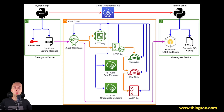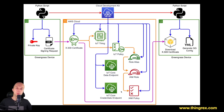Finally, we obtain the AWS IoT Core endpoints — the data endpoint and the credentials endpoint. Those endpoints will be used in the configuration of our Greengrass service.